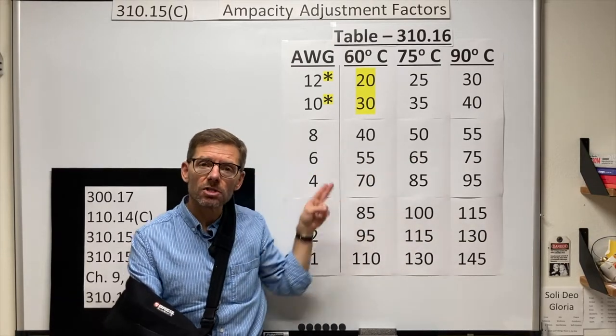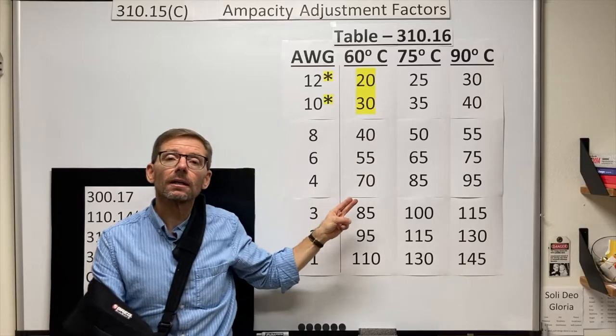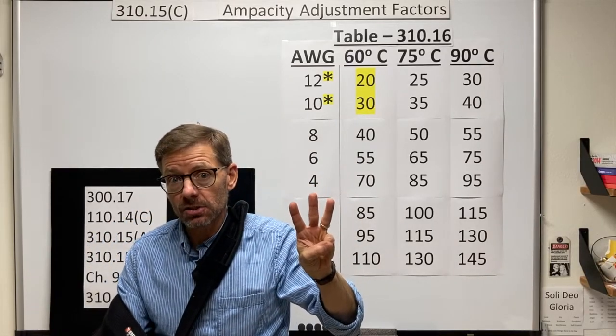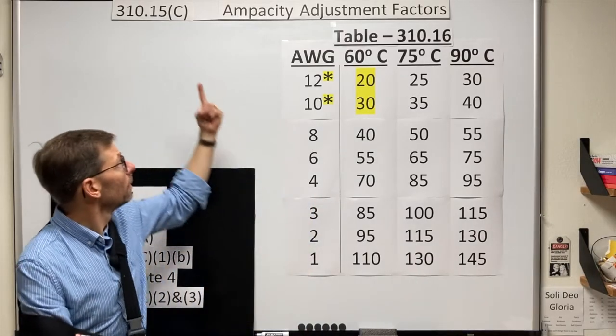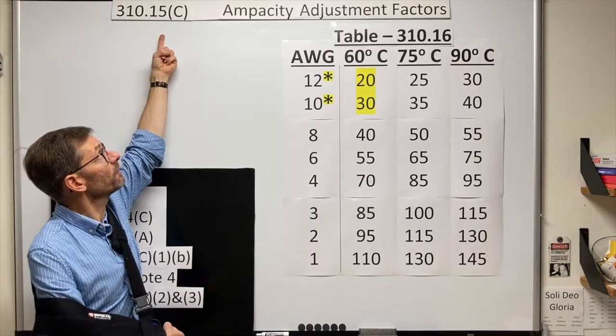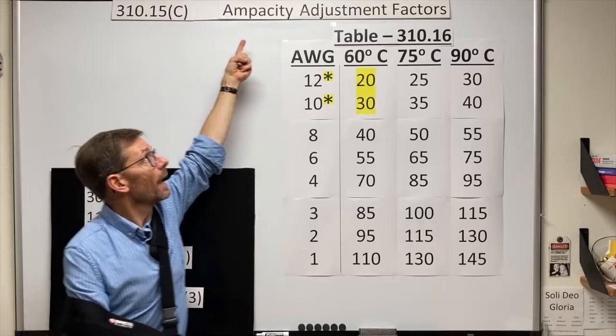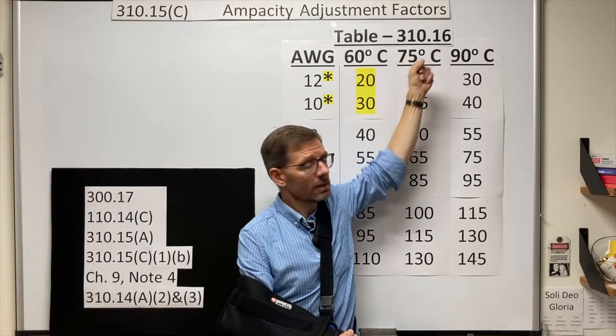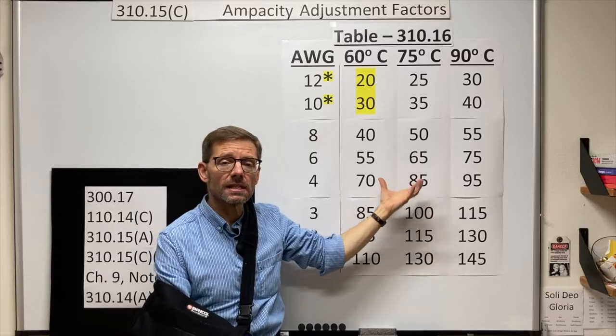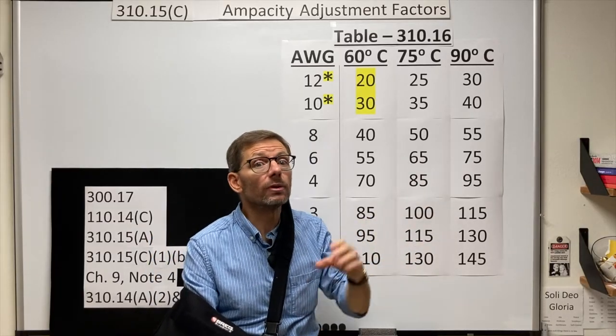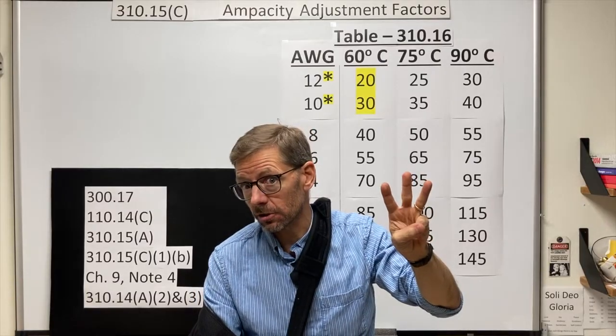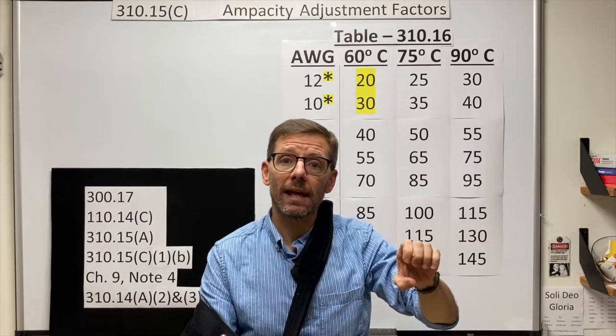Remember that the currents on our ampacity tables limit us to three current carrying conductors. So this video is about 310.15(C), ampacity adjustment factors. How do we adjust these ampacities in order to legally carry more than three current carrying conductors in a raceway or a cable?